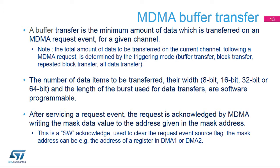The number of data items to be transferred and their width — 8-bit, 16-bit, 32-bit, or 64-bit — are software programmable. The length of the burst used for data transfers is also programmable independently. After an event requiring a data array to be transferred, a request signal is sent to the MDMA controller. The MDMA controller serves the request depending on the channel priorities. The request is acknowledged by writing the mask data value to the address given in the mask address when these registers are set.